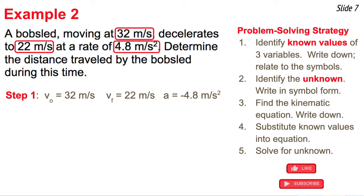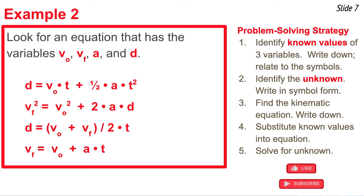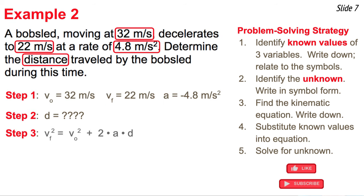In step two, I try to find the unknown variable. It says determine the distance traveled by the bobsled during this time. So I'm looking for D. That's step two. D equal question mark. In the third step, I'm going to look through my list of four equations for the one equation that has V original, V final, A, and D in it. So when I scan my list, I notice that the second equation in this list has those four variable symbols in it. So step three, I'm going to write that equation down. There it is.